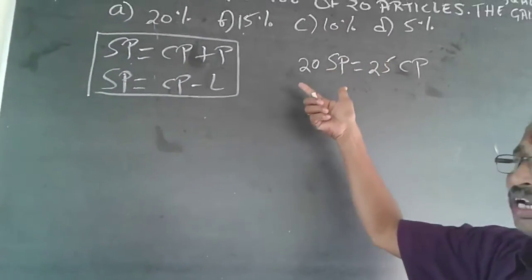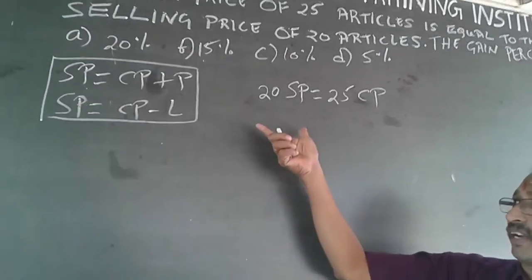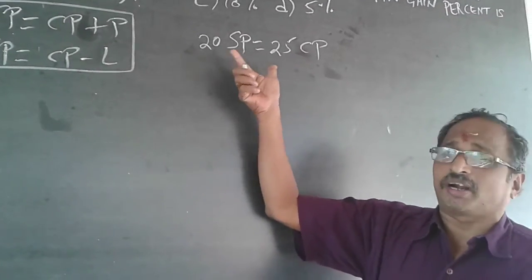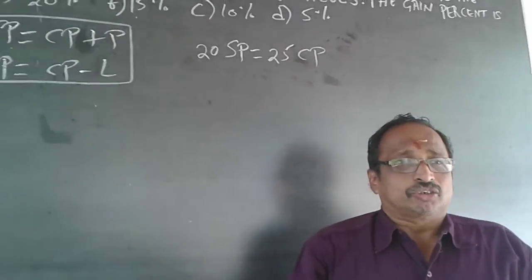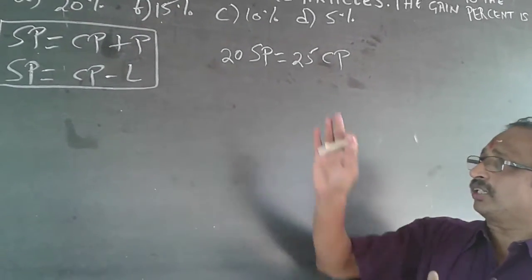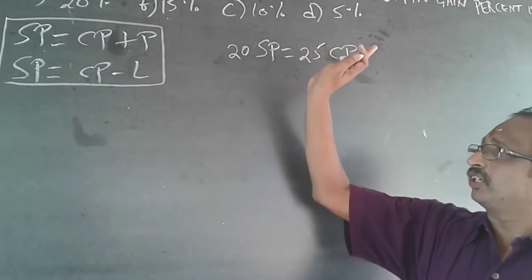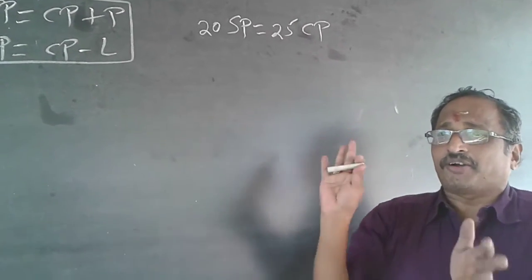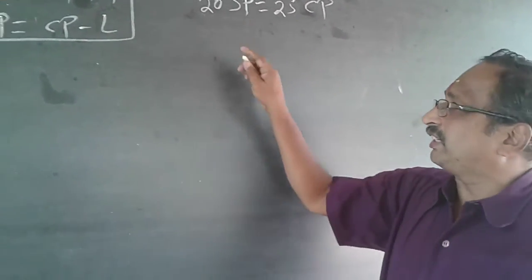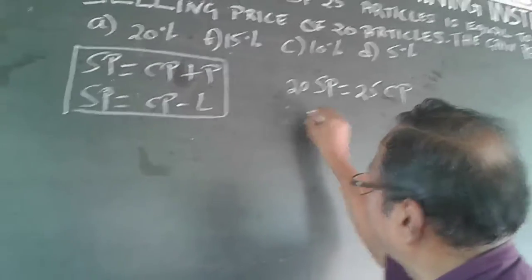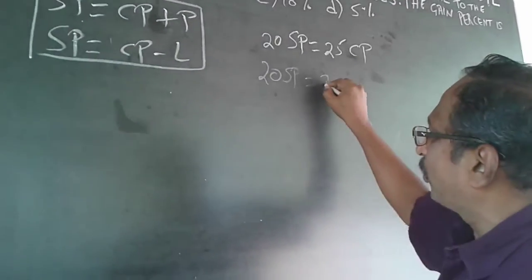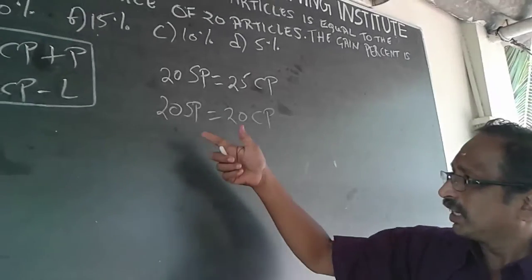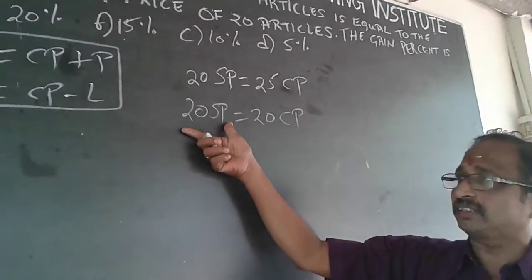Since I am selling 20 articles, I am only concerned with the cost price of those 20 articles. I should equate things to 20 articles, so I write this equation as 20 SP equals 25 CP, where this represents the selling price and cost price of 20 articles.